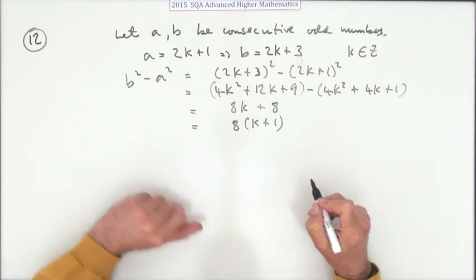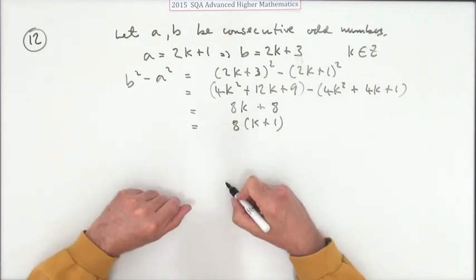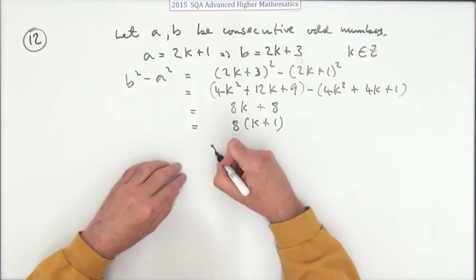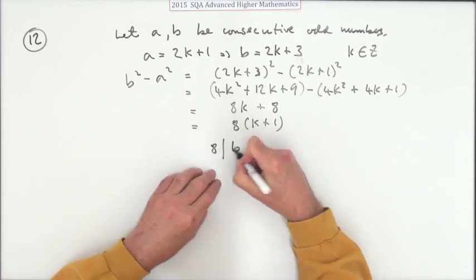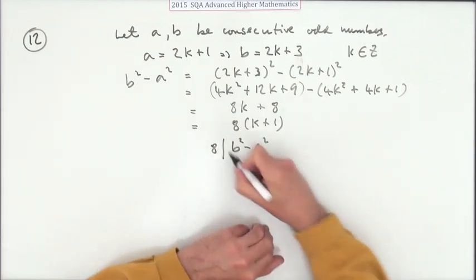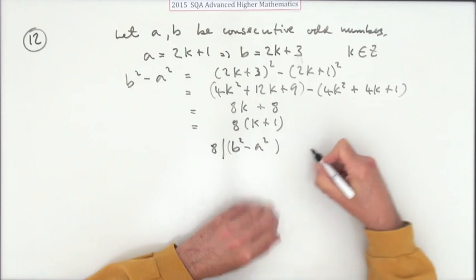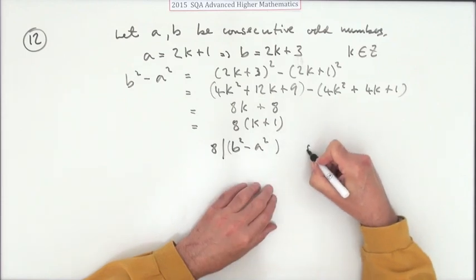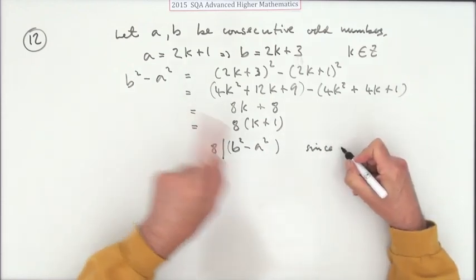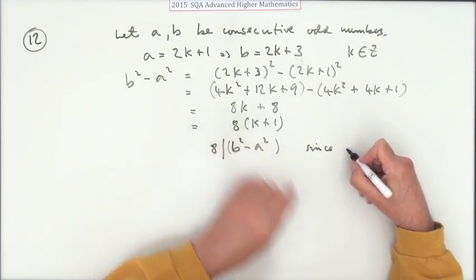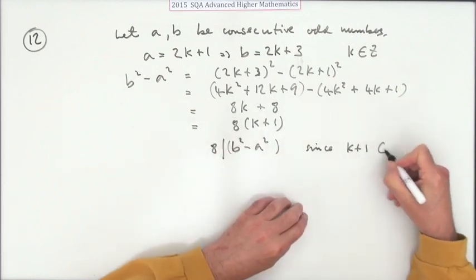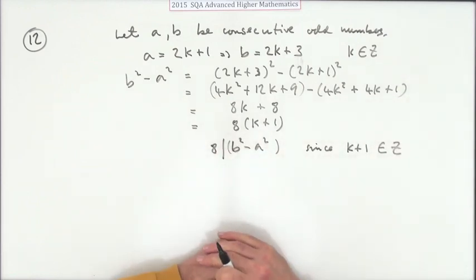That's a multiple of 8 — it divides by 8. So you can see 8 divides B squared minus A squared. Since K is an integer, K + 1 is also an integer, confirming that the division is exact and the proof is complete.